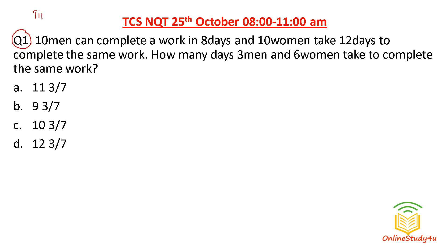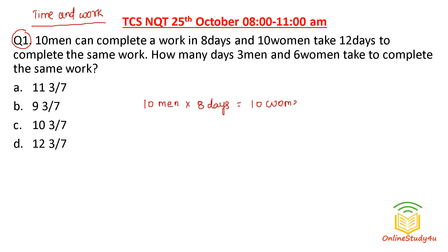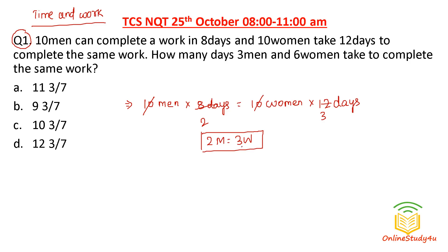Question number one was from time and work. One thing I wanted to tell you before starting: there were many questions for which the options were wrong — more than two to three questions had wrong options. Now, 10 men can complete a piece of work in 8 days and 10 women can complete the same piece of work in 12 days. So we compare efficiency: 10 and 10 cancel, giving two men equal to three women, meaning their efficiencies are equal.